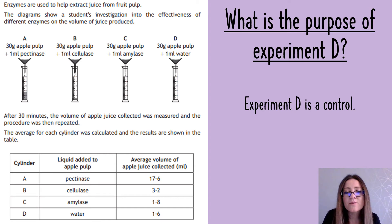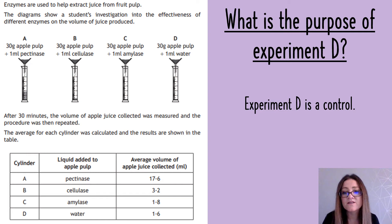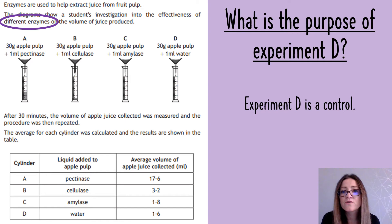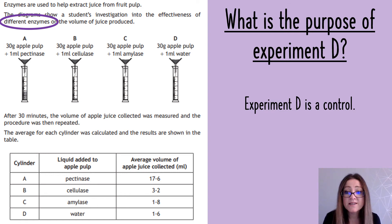Another question involves controls. They can ask this two ways: they can have a control already set up - like experiment D here - and ask you what's the purpose of it, or they can omit the control and ask you to describe one. For controls, you need to look at the independent variable. A control is an experiment where you remove that independent variable. Here, the independent variable is the different enzymes, so we're changing enzymes.